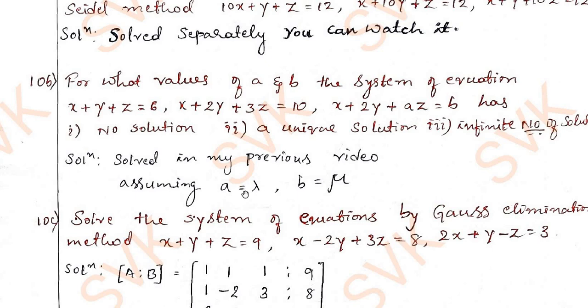Here in 10b, I have solved for a equal to lambda and b equal to mu. In this problem, they have provided a and b. But in my previous video, I have solved for lambda and mu. That is the only changes I have done here.